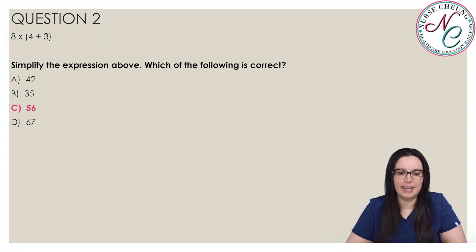To simplify the expression 8 times parenthesis 4 plus 3, we use the order of operations. Following the order of operations, first perform operations in the parenthesis. 4 plus 3 equals 7. Then we multiply 8 times 7 to get our correct answer, 56.